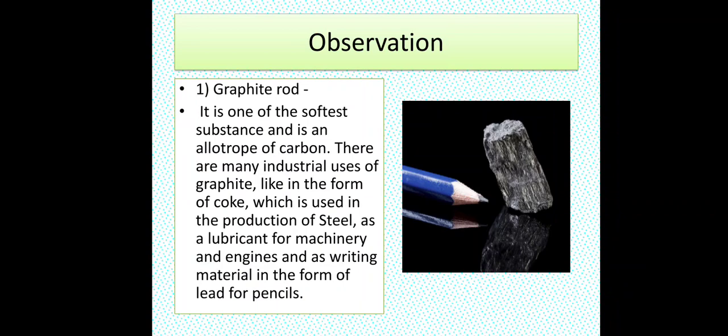Observation of our activity. 1. Graphite rod. It is one of the softest substances and is an allotrope of carbon. There are many industrial uses of graphite, like in the form of coke which is used in the production of steel, as a lubricant for machinery and engines and as writing material in the form of lead for pencils.